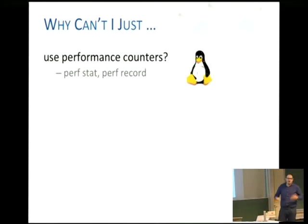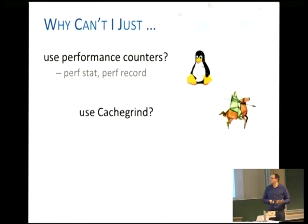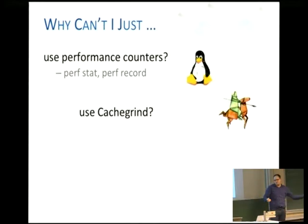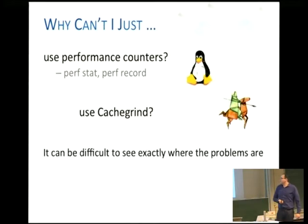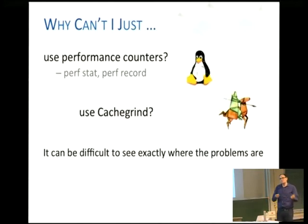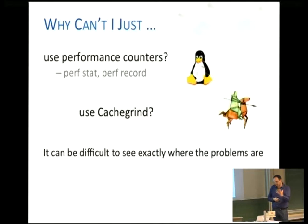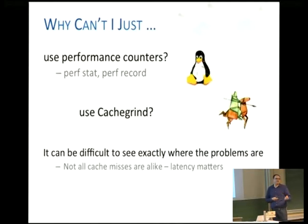Why can't I just use performance counters? Why can't I just use CacheGrind and see how my cache misses look? Well, it turns out that using these methods can be really good for software optimization, but difficult to do a hardware-software optimization when you're trying to look at performance. The problem is that not all cache misses are alike.